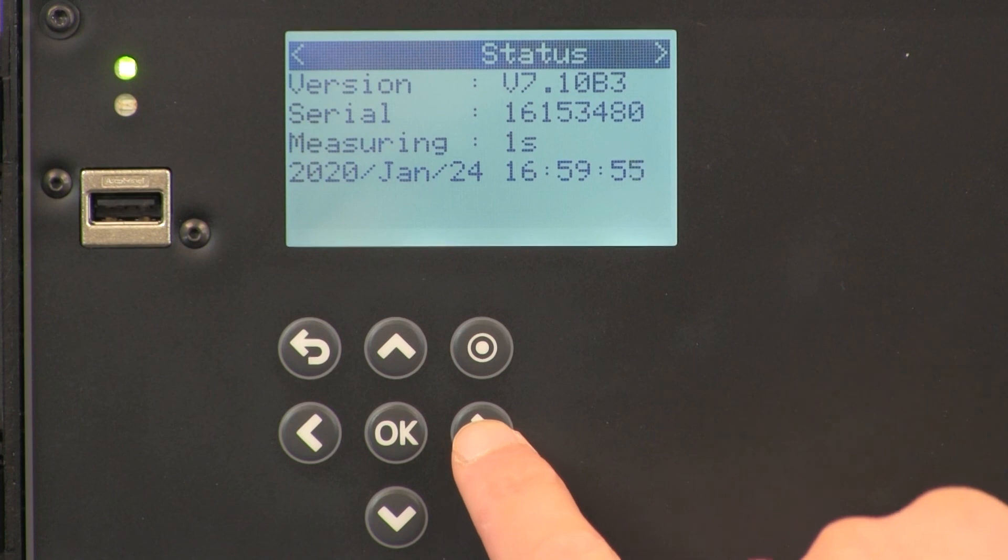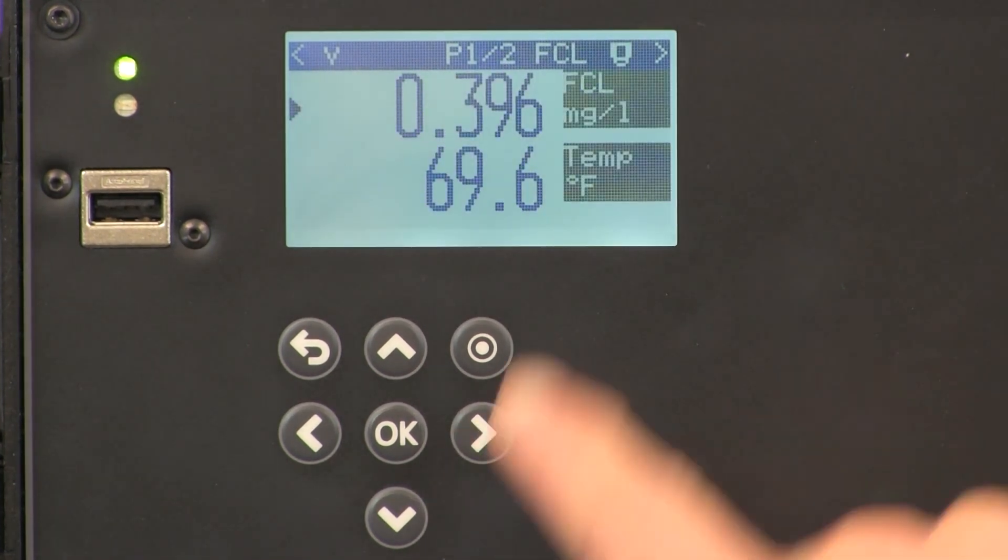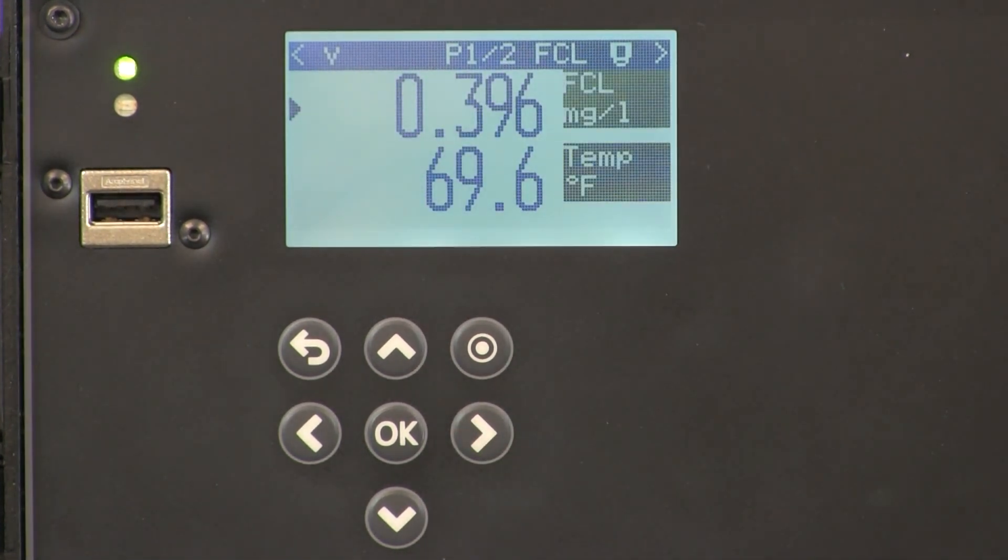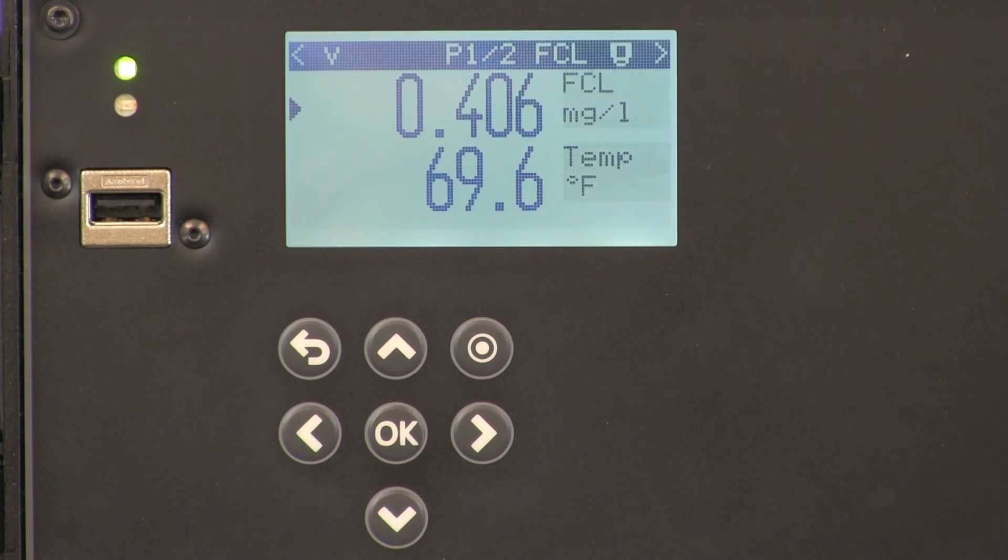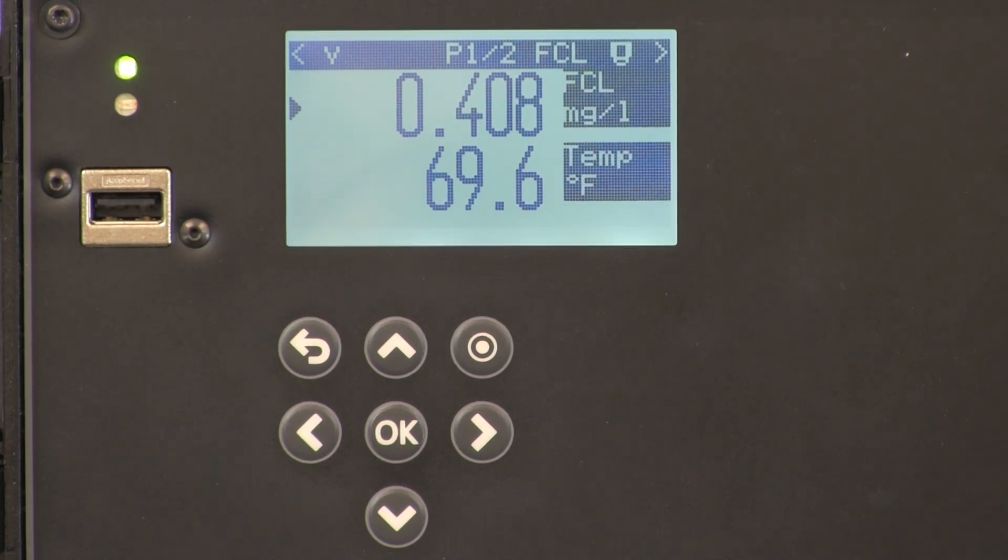Now if we hit right from the status screen, we can see on our parameter screen the chlorine and temperature measurements. We have now completed our setup of the DID.